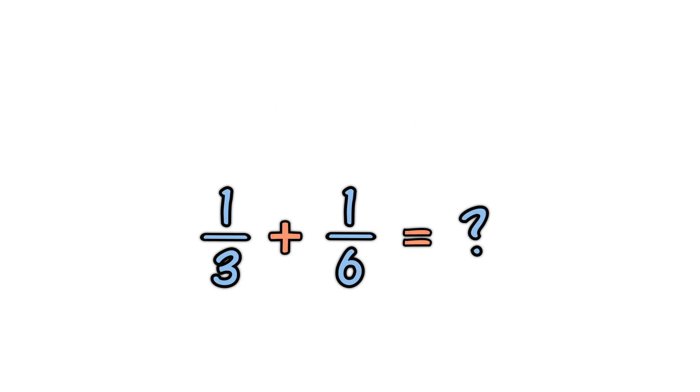But what should the new denominator be? One simple answer is to multiply the current denominators together. Three times six equals eighteen. So, instead of having three or six slices, we'll make both of them have eighteen slices.